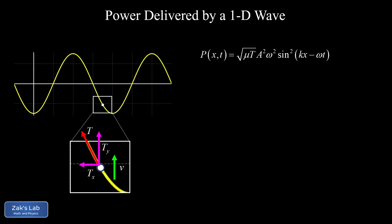That's the main result. A few key observations from this formula: first, power is proportional to the square of the amplitude — important because this holds for sound waves and even light waves. Second, power is proportional to the square of the angular frequency, hence proportional to the square of the ordinary frequency. Third, since the maximum value of sine is 1, the maximum power is simply √(μT) · A²ω².